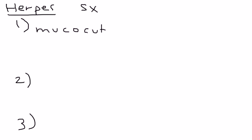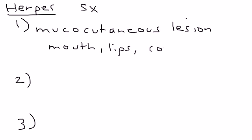There are three types of herpes infections. The first one is a mucocutaneous lesion. These lesions commonly occur on the mouth or the lips or the conjunctiva or the cornea. You have these characteristic vesicles that are in clusters.